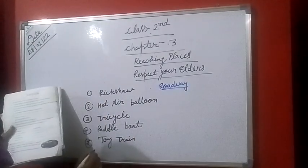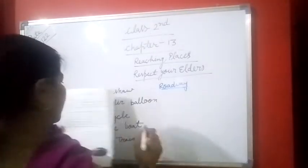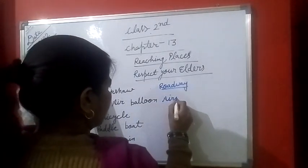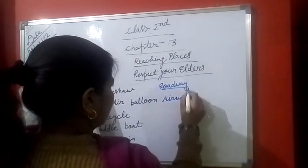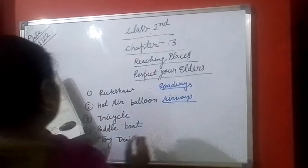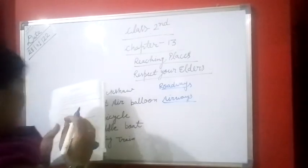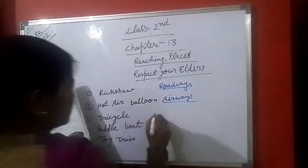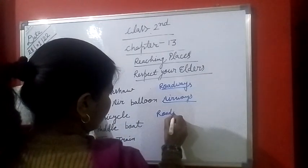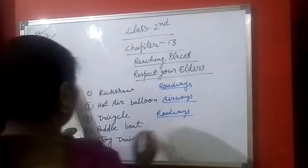Number 2: Hot air balloon — airways. Number 3: Tricycle. Kahan chalega? Road pe chalega, to roadways.